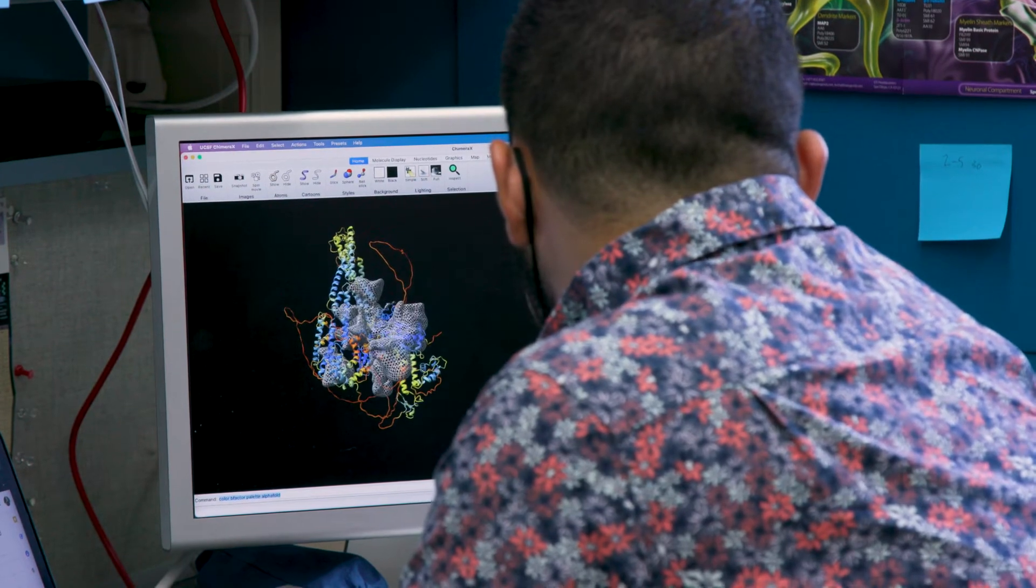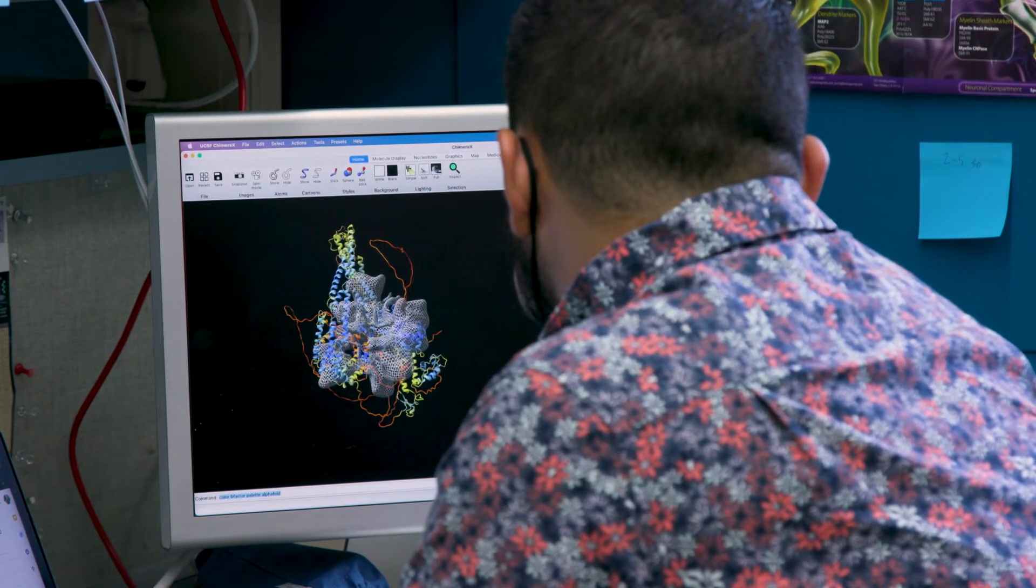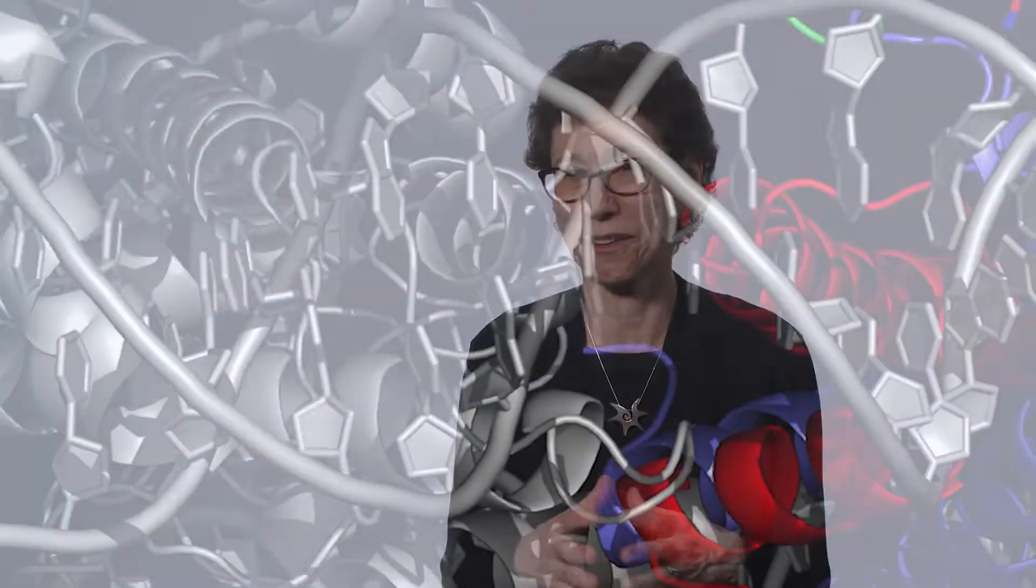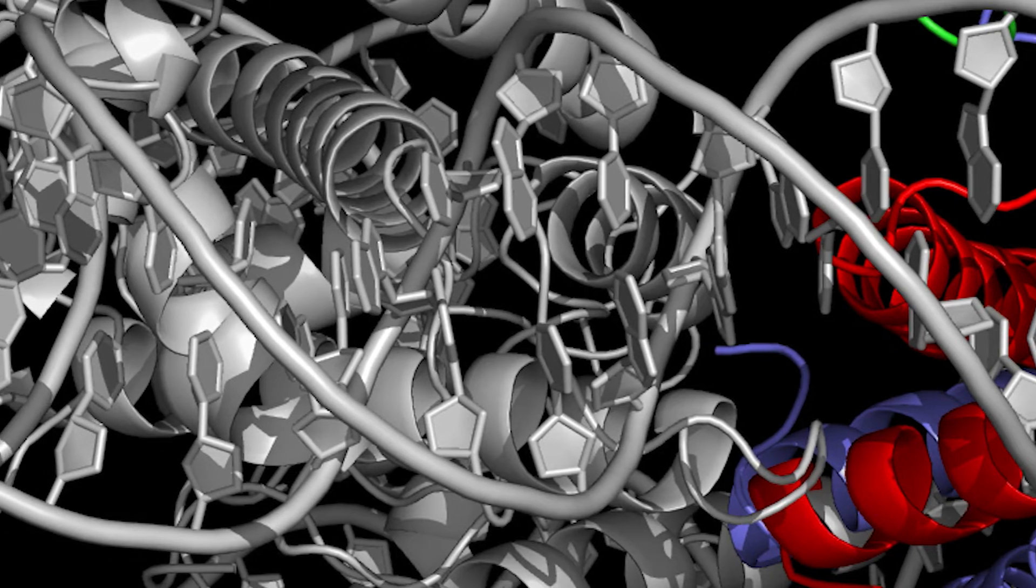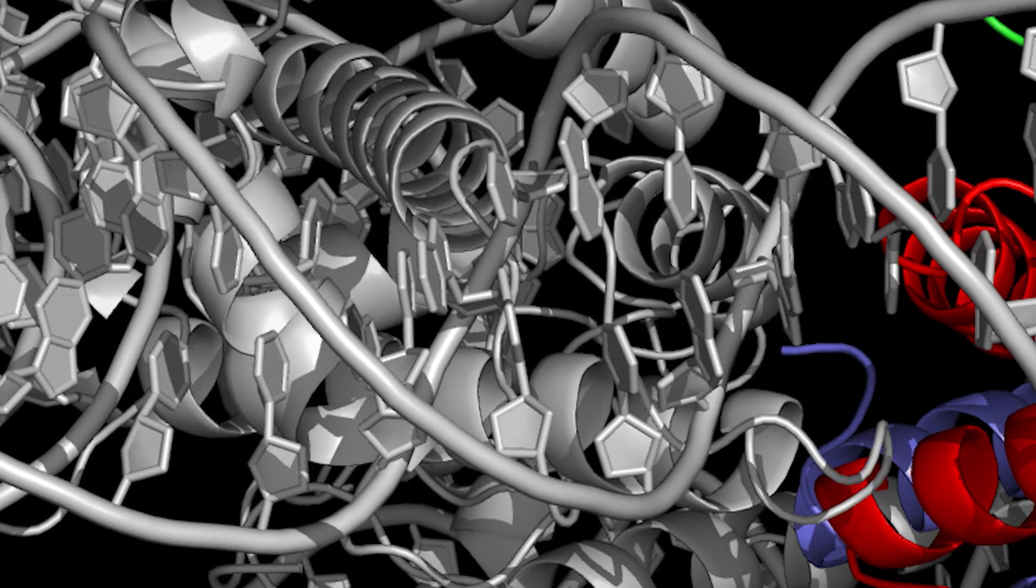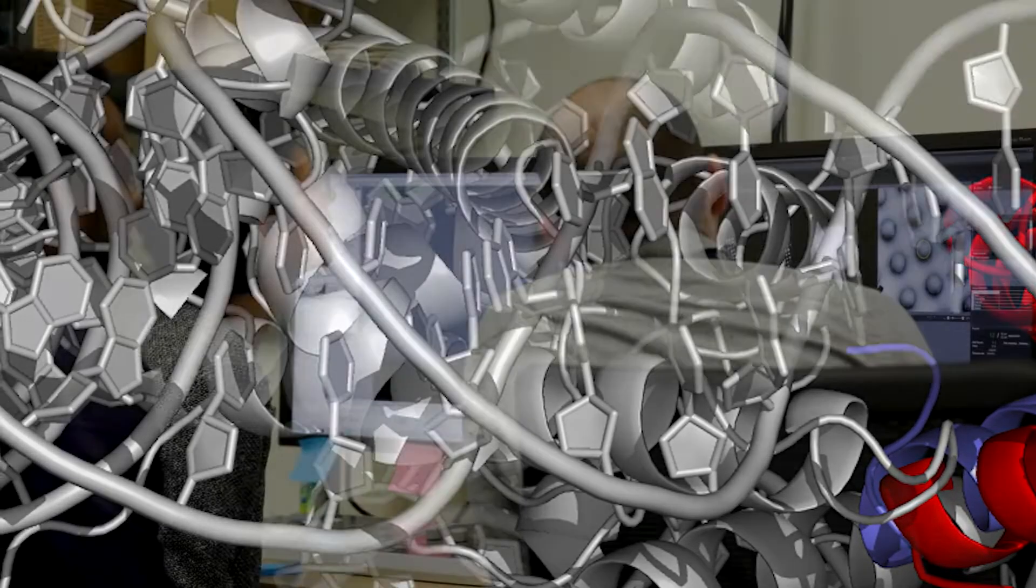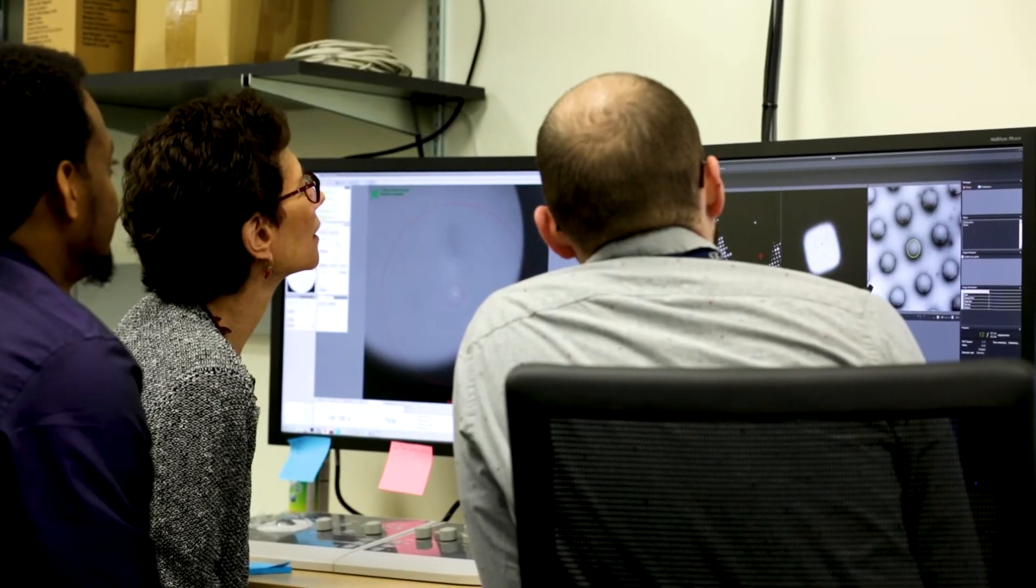CryoEM has really revolutionized structural biology because it's provided us with a new way to get structures of these macromolecular machines. They're absolutely tiny—by an atom's basis it's large, but they're very, very small—and so this gives us a new method by which we could determine structures of these biological molecules and then understand how they work.